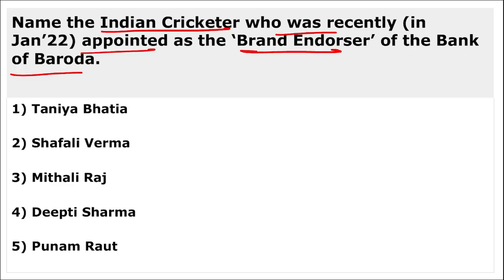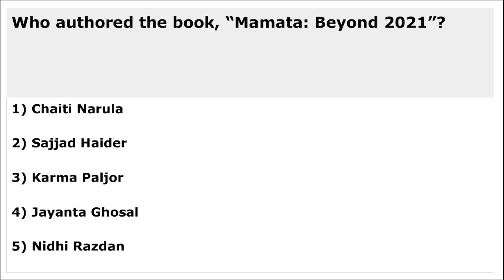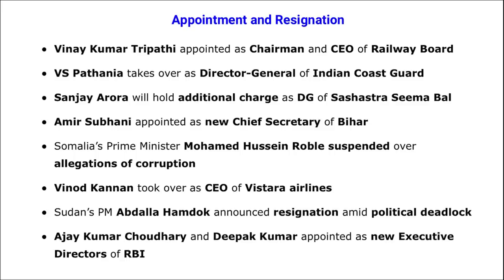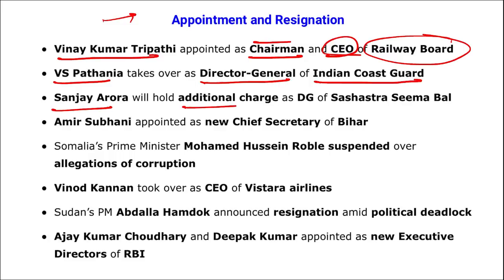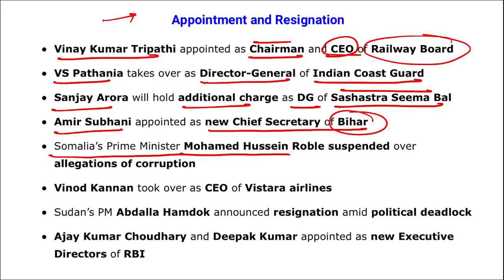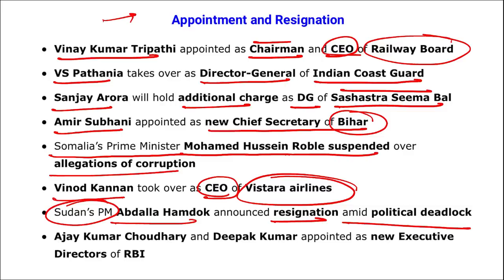Shefali Varma was appointed as brand endorser of Bank of Baroda. The book 'Mamata Beyond 2021' was authored by Jayanta Ghoshal. Vinay Kumar Tripathi was appointed as Chairman and CEO of Railway Board. V.S. Pathania took over as Director General of Indian Coast Guard. Sanjay Rana will hold additional charge of DG of Shastra Seema Bal. Amir Subhani was appointed as new Chief Secretary of Bihar. Vinod Kannan took over as CEO of Vistara Airlines. Sudan's Prime Minister Abdullah Hamdok announced resignation amid political deadlock.